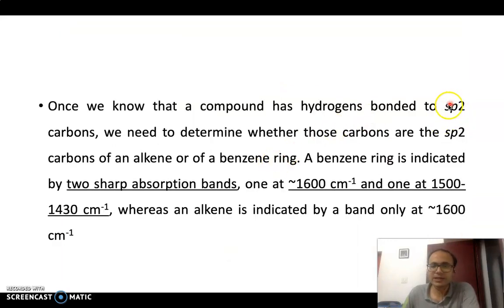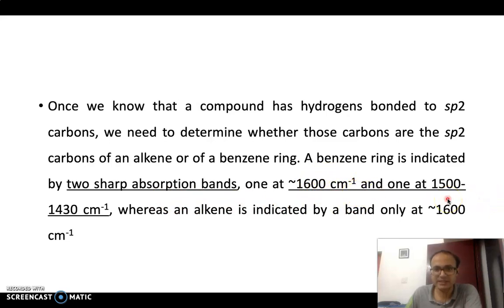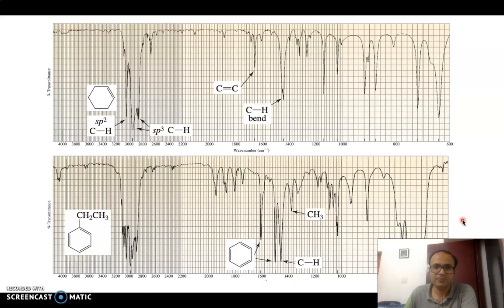Once you identify that your compound contains sp2 hybridization, the question is whether it is a pure alkene or a benzene ring. If it is a benzene ring, you will see two absorptions corresponding to C=C stretching: one at 1600 cm⁻¹ and another at 1500 cm⁻¹. However, if it is simply an alkene, you will see only one peak at 1600 cm⁻¹. Let us look at the spectra for hexene and ethyl benzene.